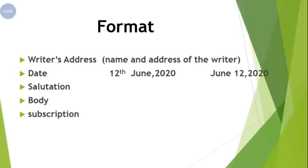When we start a letter, at first we write the writer's address at the top right corner of the page. In the writer's address we write the name and address of the writer. However, in exam papers we are not allowed to write the name and address. That's why in papers, at the place of writer's address, we simply write 'Examination Hall,' then city A.B.C. This is how we write the writer's address in papers.